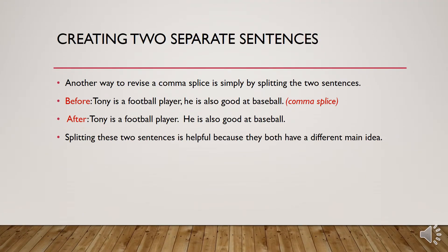Another way to revise a comma splice is by simply splitting the two sentences. This gives us the next form of punctuation, which is a period. Before: 'Tony is a football player, he is also good at baseball.' After: 'Tony is a football player. He is also good at baseball.' Splitting these two sentences is helpful because they both have a different main idea.